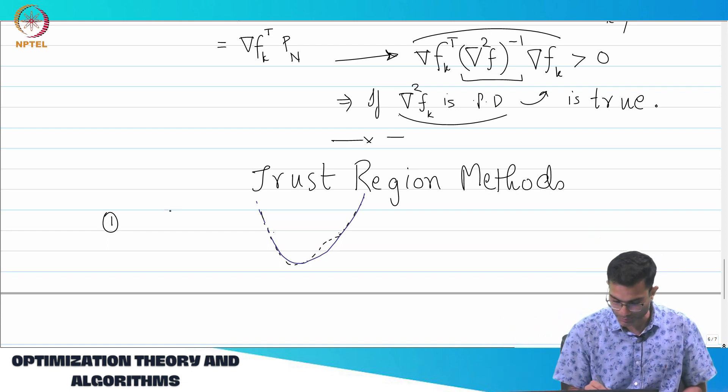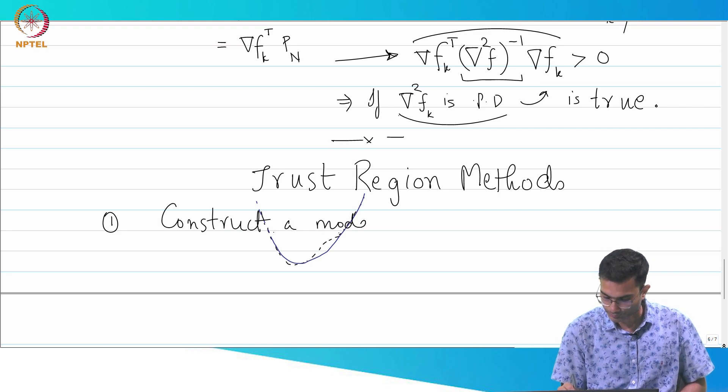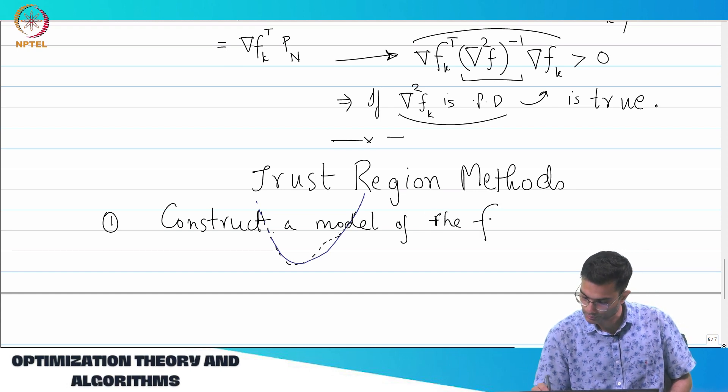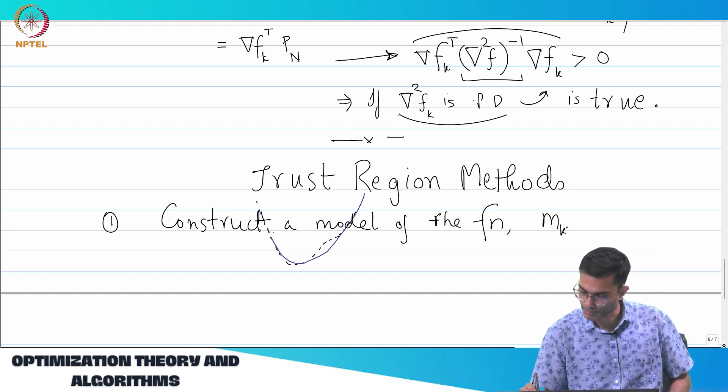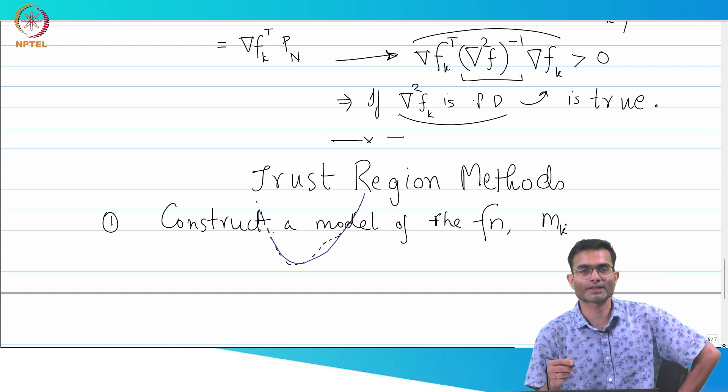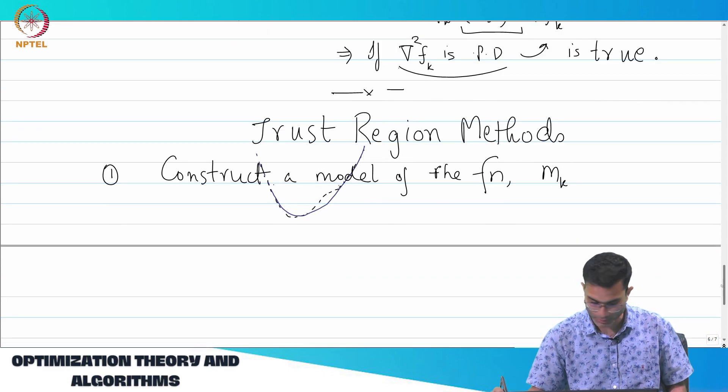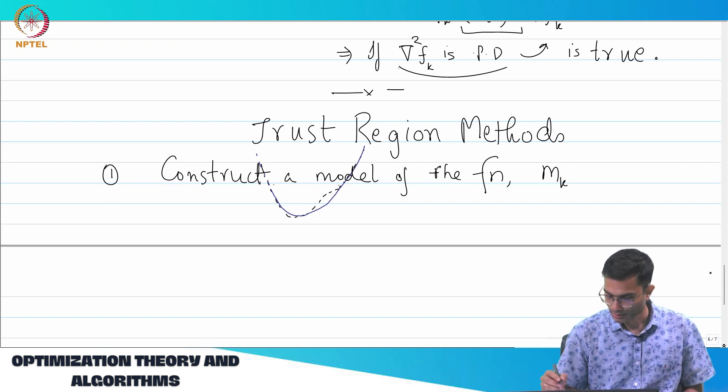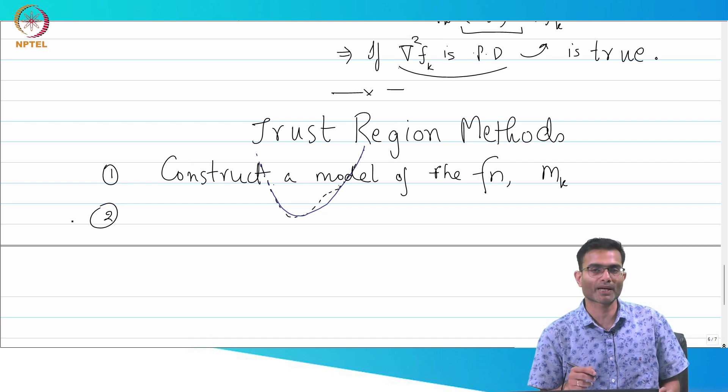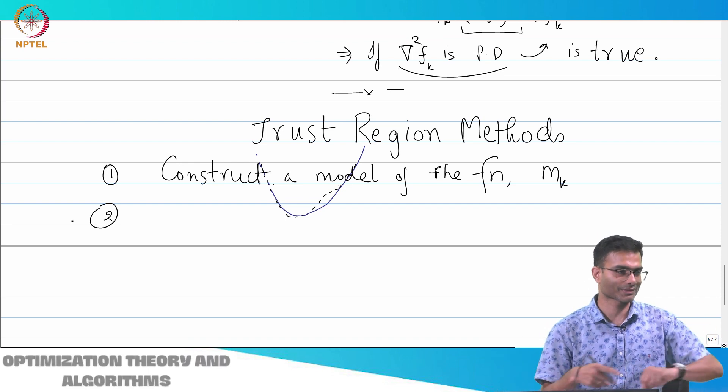So step one is quite simple: construct a model, let us call it model of the function, let us call it mk. And obviously, the objective of this is it should match the function behavior in some region, right? So again, like in the parabola, if I can fit a parabola in 1D I can fit a quadratic form in n dimensions. The idea is just the same.